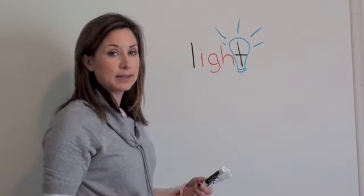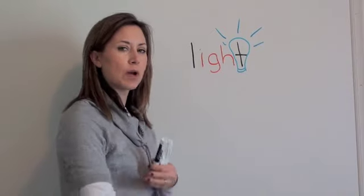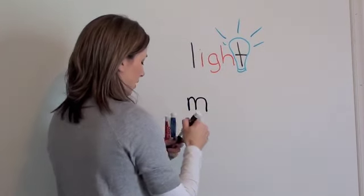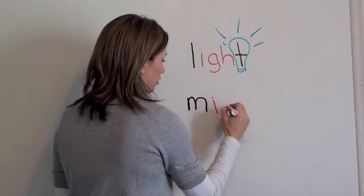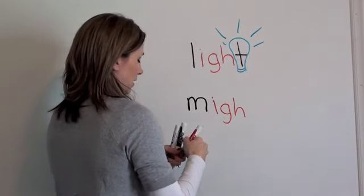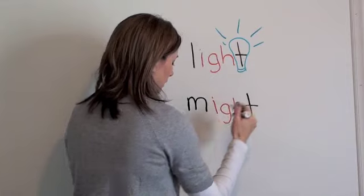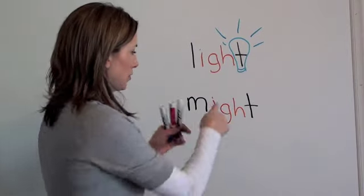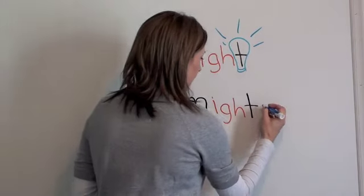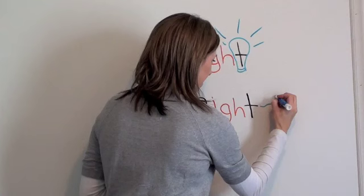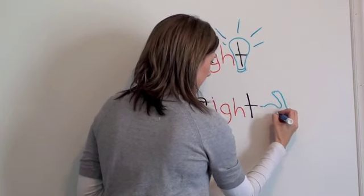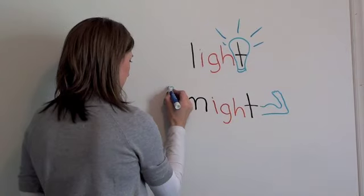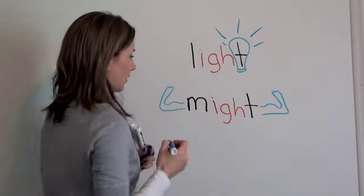The second word that I'm going to demonstrate is might. When I think of might I think of strong. So I'm going to attempt to draw strong arms. Again, write my word. M is in black. I, G, and H will be in red. And T will be in black. And since there's no real good way within the word that I can see to do strong arms, I'm just going to attach it on to the end. And there is might.